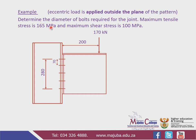We're given that the maximum tensile stress is 165 MPa and the maximum shear stress is 100 MPa. Our eccentric load is 170 kN and the eccentric distance is 200 mm. We've got 5 bolts here — bolt 1, 2, 3, 4, 5 — with a spacing of 70 mm between bolts, and the total vertical distance between the bolts is 280 mm.